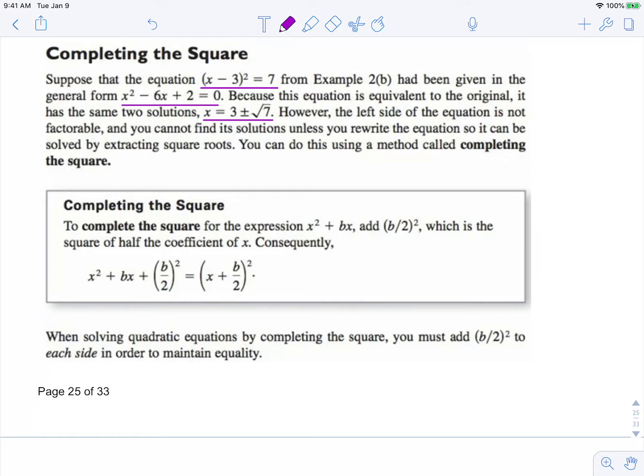You can do this using a method called completing the square. So whenever you have a quadratic expression in the form x squared plus bx, if you add b over 2 squared, it will create a trinomial that can be factored into a perfect square binomial.